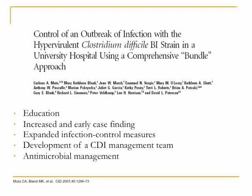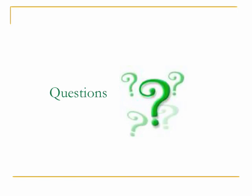A study published in CID demonstrated that a C. diff outbreak was controlled through a combination of education, increased early case finding, expanded infection control measures, and the formation of a C. diff infection management team. The team proactively investigated outbreaks and conducted rapid 'huddles' on wards to educate staff — and successfully controlled the outbreak.